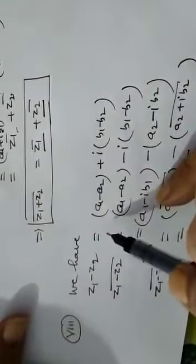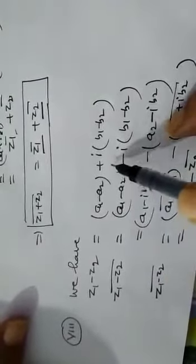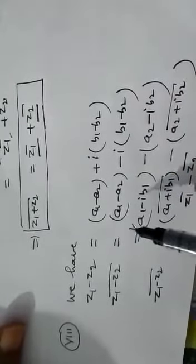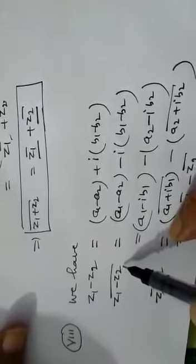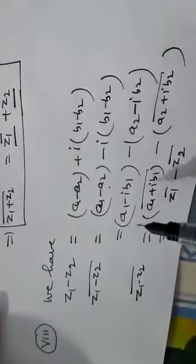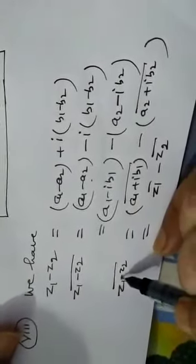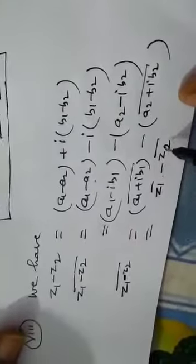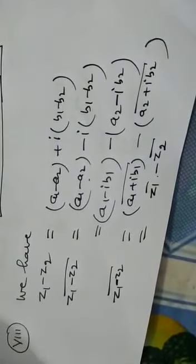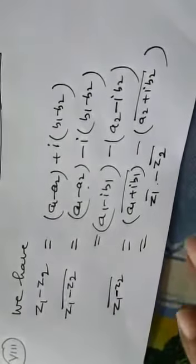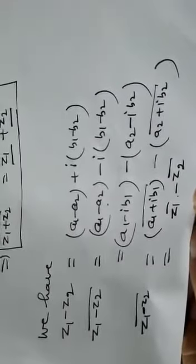For the difference property: z1 minus z2 equals (a1 minus a2) plus i(b1 minus b2). So the conjugate of z1 minus z2 equals (a1 minus a2) minus i(b1 minus b2), which equals (a1 minus ib1) minus (a2 minus ib2), that is z1 bar minus z2 bar separately. In this way we can prove that the conjugate of the difference of two complex numbers is equal to the difference of their conjugates separately.